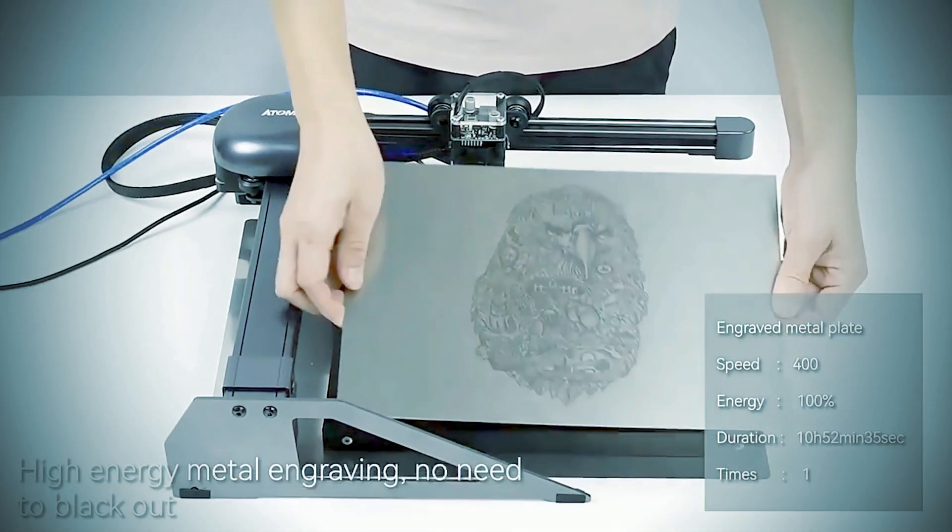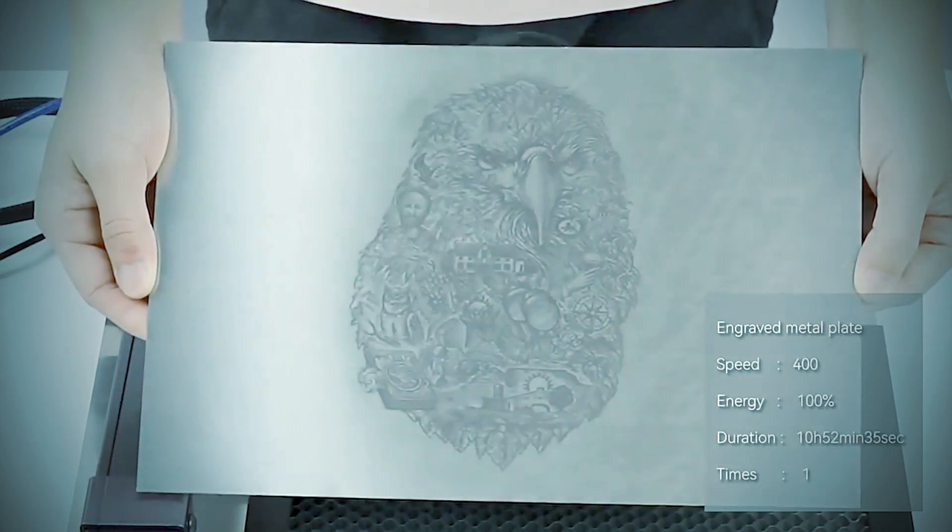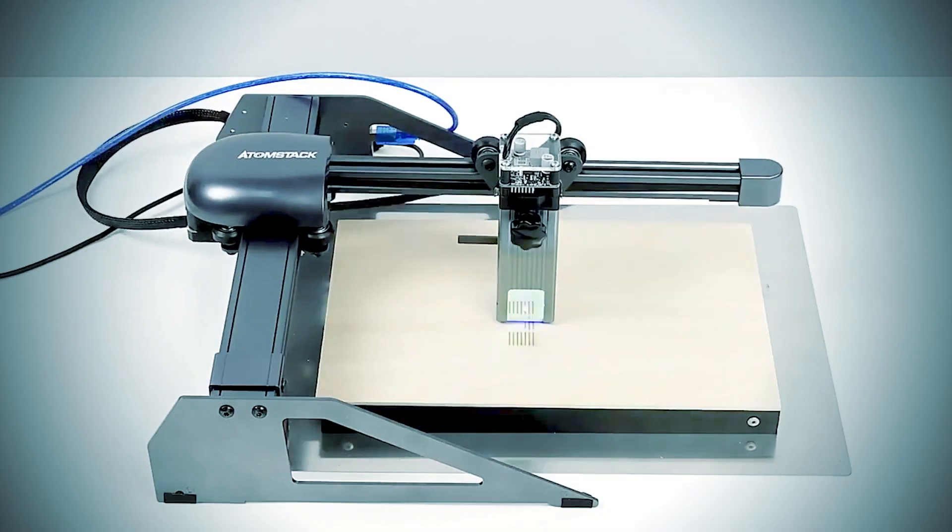Solid Structure: All anodized aluminum alloy structure, lightweight, solid and durable, is essential for a laser engraver to engrave and cut accurately.